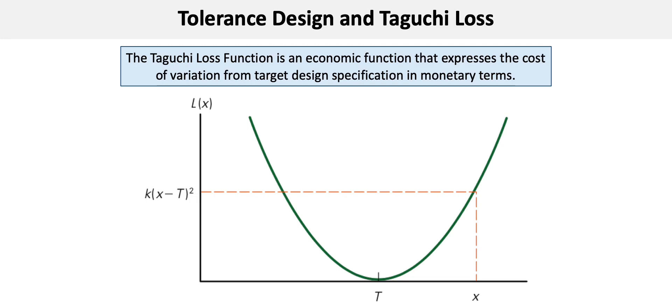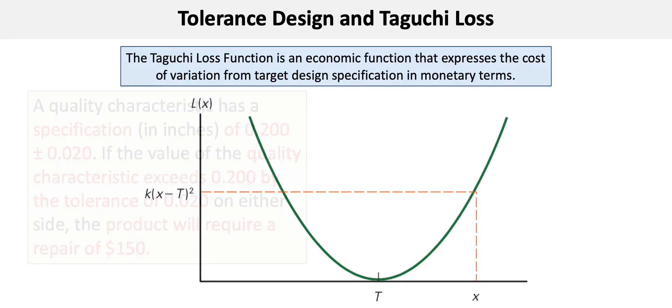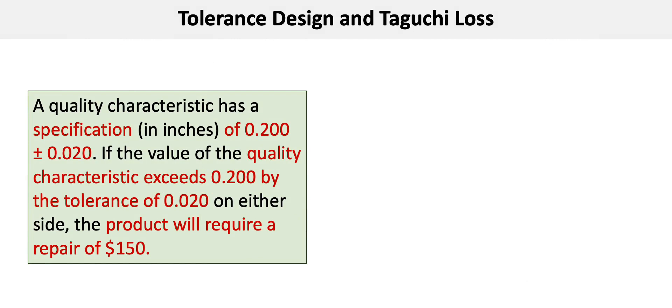Now let's get into the problem. In this problem, a quality characteristic has a specification in inches of 0.20 plus or minus 0.02 inches. If the value of the quality characteristic exceeds 0.20 inches by the tolerance of 0.02 inches on either side, the product will require a repair of $150.